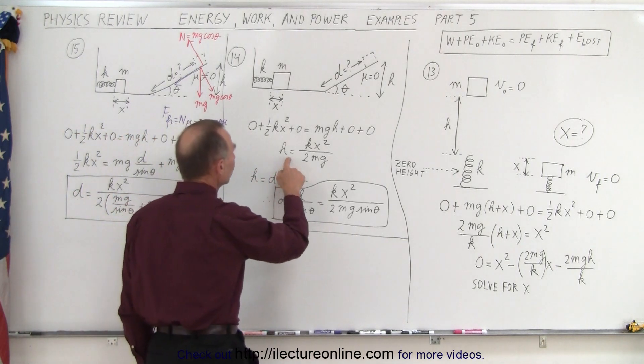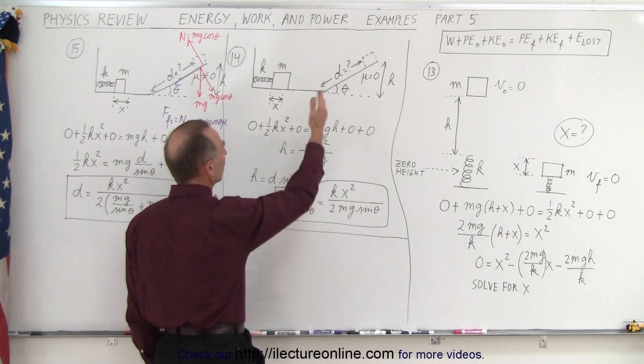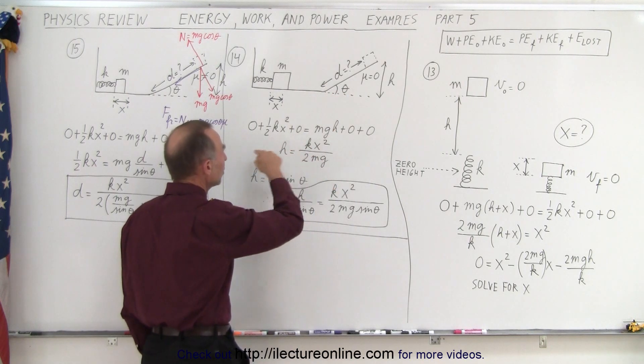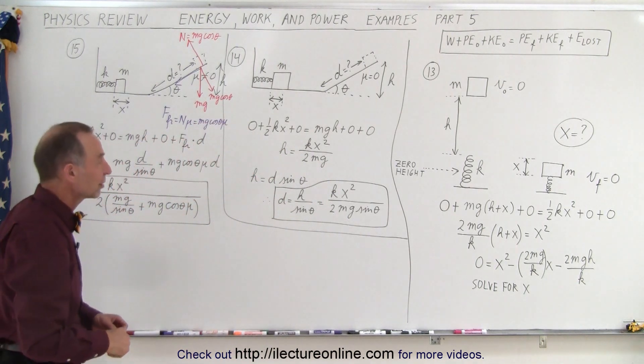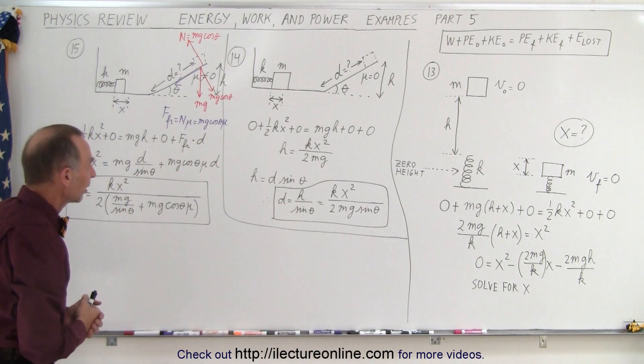We solve that equation for h, but then we realize we don't want h, we want d. The relationship between h and d is h = d sin θ. So when we plug that in, we get the correct value for d, the distance the block slid up the hill.